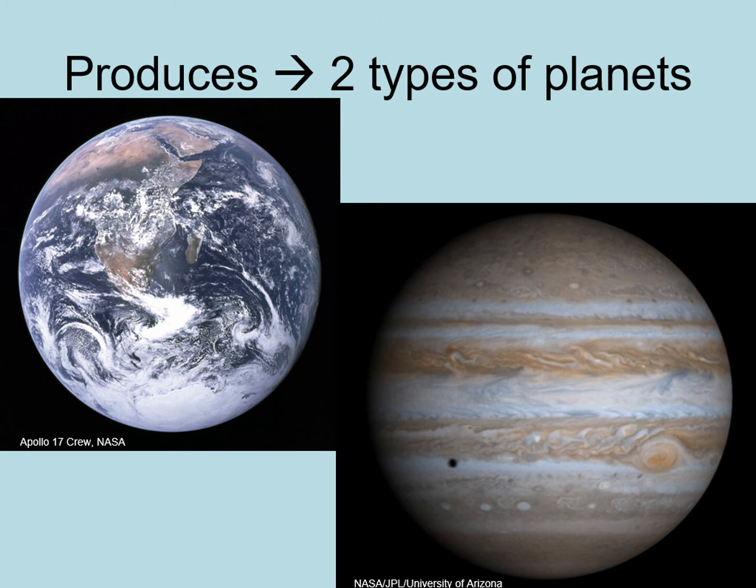In our solar system, this separation into inner and outer solar systems caused by condensation leads directly to the distinction between terrestrial and Jovian planets. The extra mass of solid hydrogen compounds in the outer solar system allows planets to form more quickly and much larger, letting them go on to gas accretion and produce the Jovian planets.